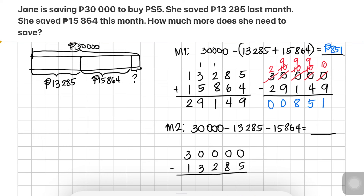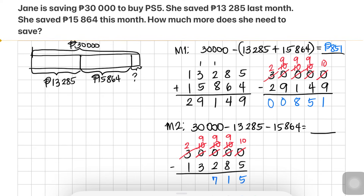Since we cannot subtract 5 ones from 0, we regroup from the 3 ten-thousands. That becomes 2 ten-thousands, 1 ten-thousand becomes 10 thousands, then 1 thousand becomes 10 hundreds, 10 hundreds becomes 9 hundreds with 10 tens, and 1 ten becomes 10 ones. Subtracting: 10 minus 5 is 5, 9 tens minus 8 tens is 1, 9 hundreds minus 2 hundreds is 7, 9 thousands minus 3 thousands is 6, 2 ten-thousands minus 1 ten-thousand is 1. So 30,000 minus 13,285 equals 16,715.